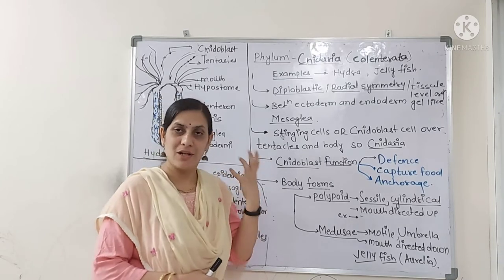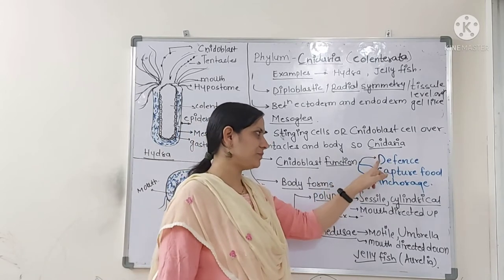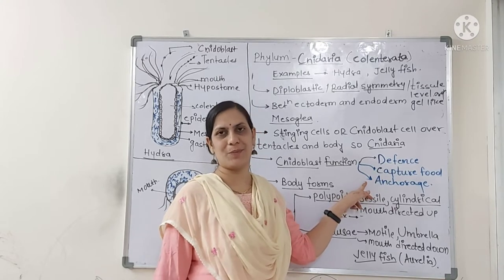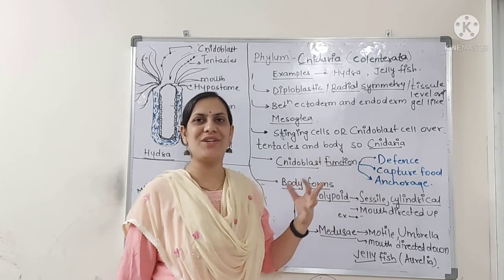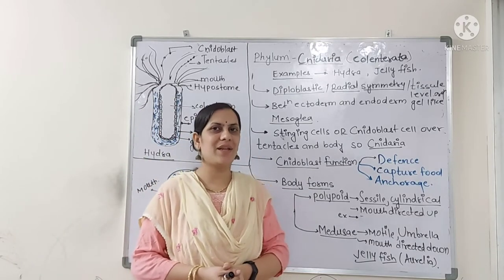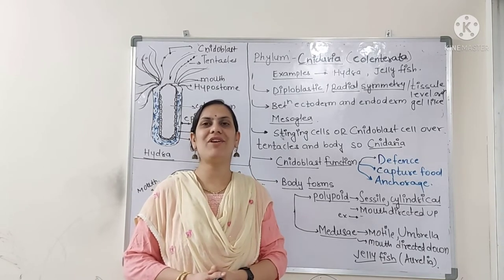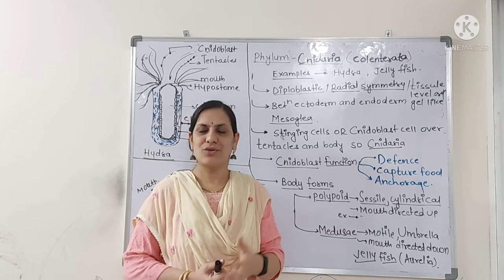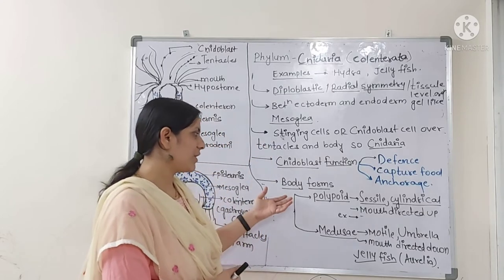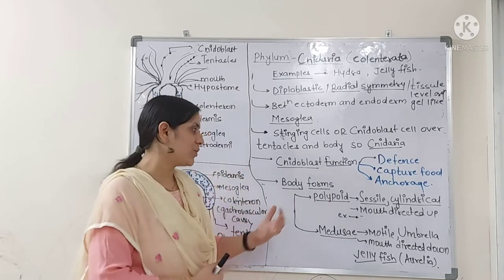Three functions are done by cnidoblast cells: they help for defense, help for capturing food material, and help for anchorage. Whatever cnidoblast cells are there over the tentacles, they have a capsule inside them known as nematocyst, which is poisonous and contains venomous material inside it, helping for the defense of cnidarians.